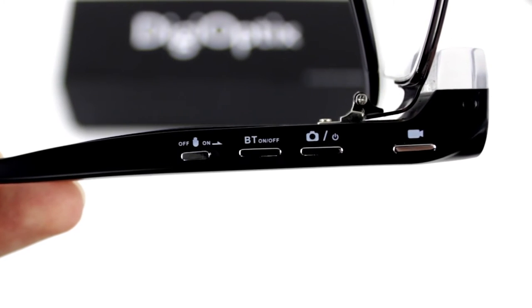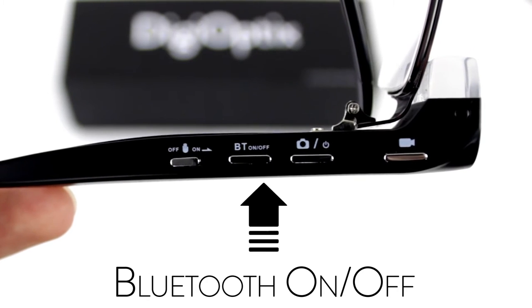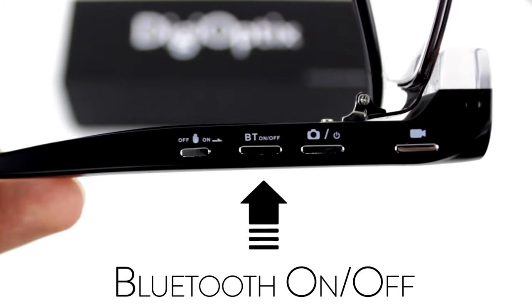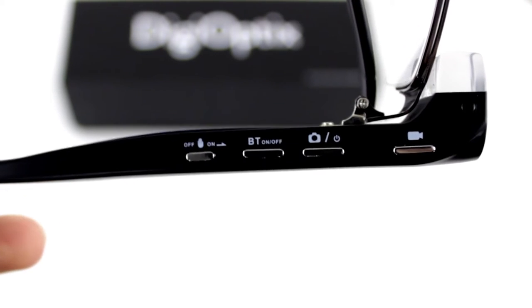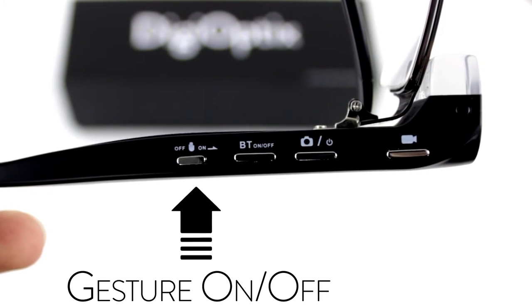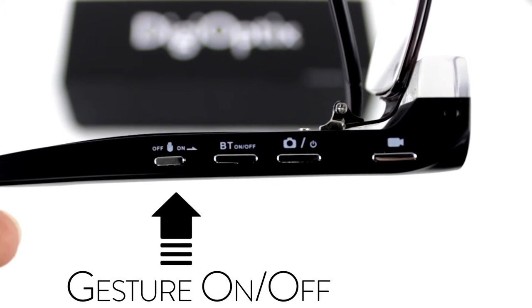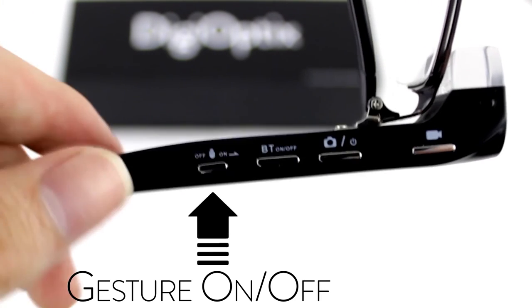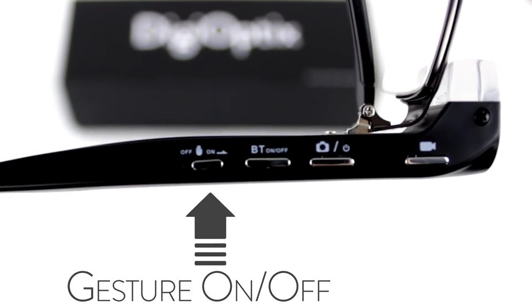Right after the switch is your Bluetooth on/off button. Push this to make your glasses available to nearby Bluetooth devices like a smartphone. The last button is your gesture on/off slider. In the off position, gesture control will not work. The on position allows you to use all available gestures at your convenience.